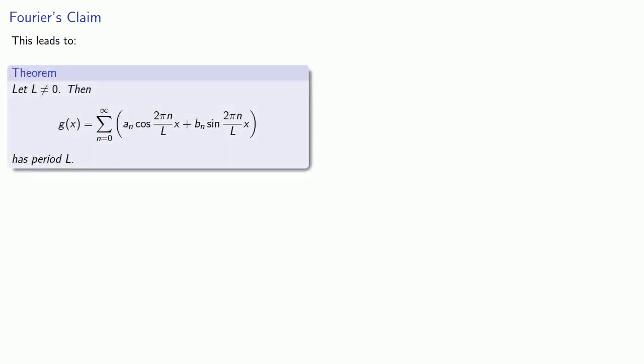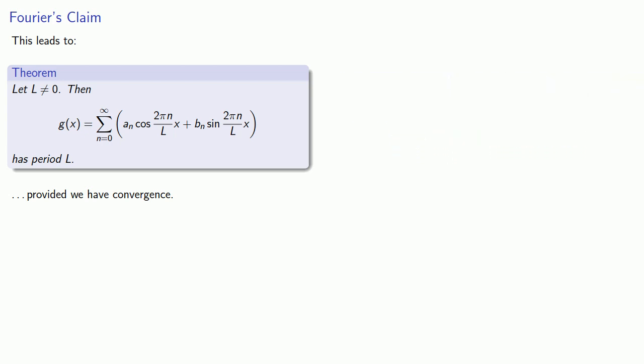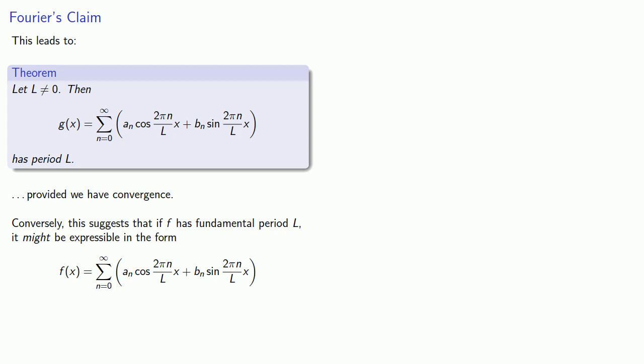This leads to the following idea. Take L ≠ 0. Then g(x), the infinite series whose terms are aₙcos(2πnx/L) + bₙsin(2πnx/L), has period L, provided we have convergence. Remember, any results regarding an infinite series are meaningless without convergence. Conversely, this suggests that if f has fundamental period L, it might be expressible in the form of a trigonometric series.